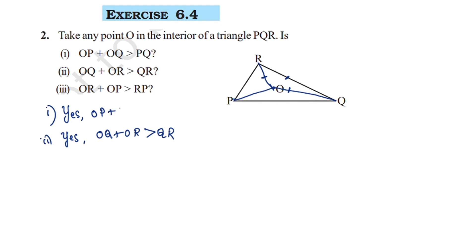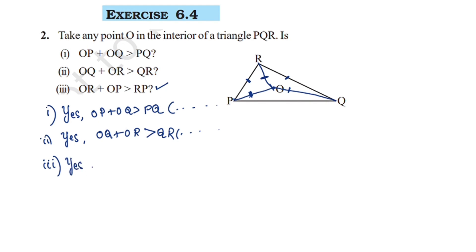OP plus OQ is greater than PQ. The third inequality is OR plus OP is greater than RP. Using triangle ORP, OR plus OP is greater than RP. The reason is that the sum of the lengths of any two sides of a triangle is greater than the length of the third side.